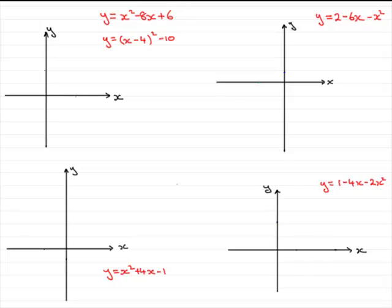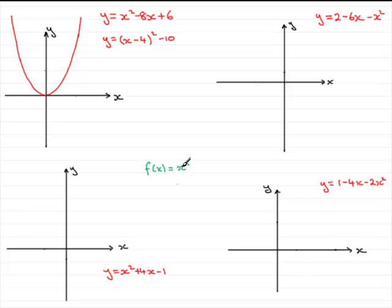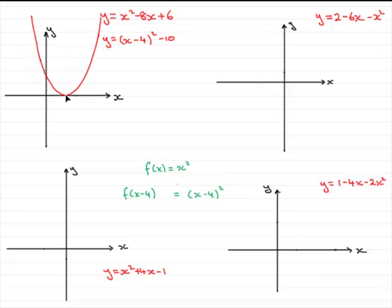This helps with sketching using transformations of graphs. We start with the basic graph f of x equals x squared — a parabola passing through the origin. We replace x with x minus 4, giving f of x minus 4, which is essentially x minus 4 all squared. This translates the graph parallel to the x-axis, moving it 4 units to the right. So we mark in the point x equals 4 on the x-axis.